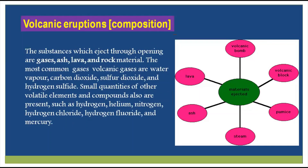Now we'll see what sort of volcanic eruption we have — meaning when the volcanoes are being erupted. The substances which eject through the opening are gases, ash, lava, and rock material. So we have different types of material reaching the surface of the earth through the vent or through the volcanoes: gases, ash, lava, and rock material.